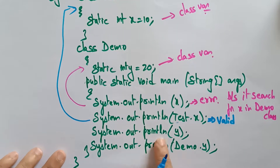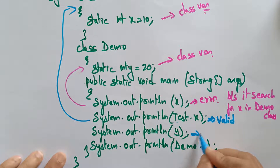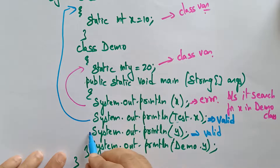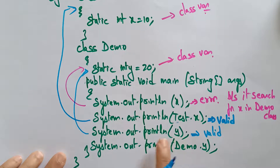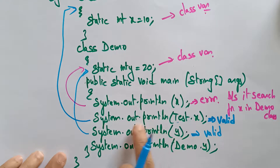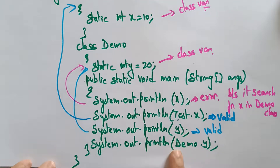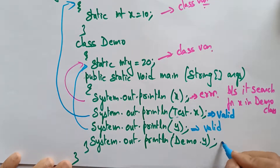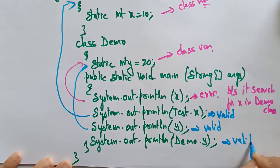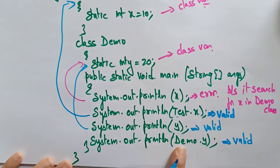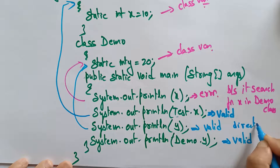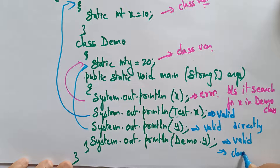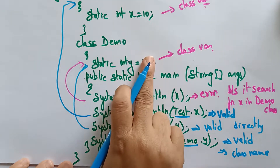System.out.println(y) — is this valid? Yes. The controller searches in the Demo class and finds y, printing 20. This is direct access. System.out.println(Demo.y) — also valid. Using the class name Demo to access y. Both direct access and class name access work here.